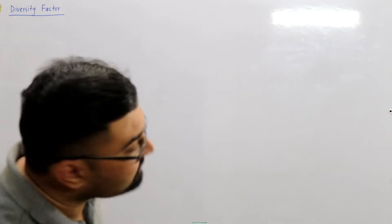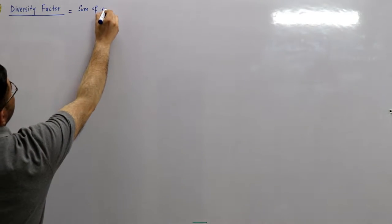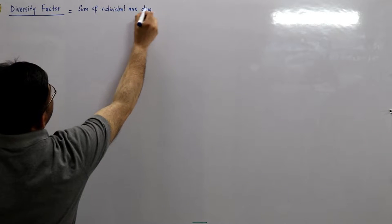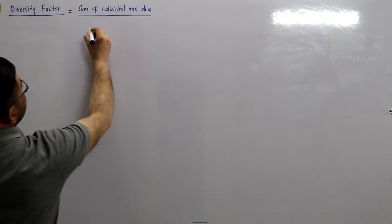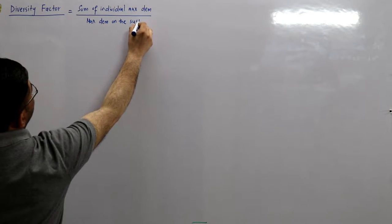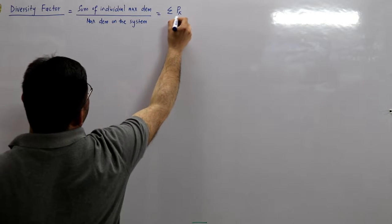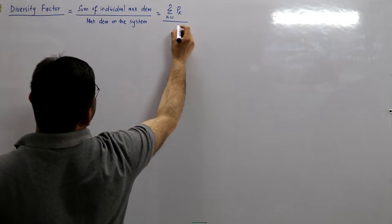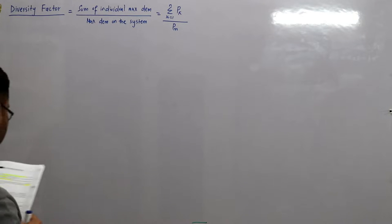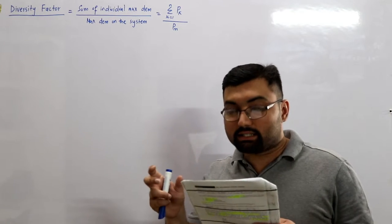If I define it: the diversity factor is the summation of individual maximum demands divided by the maximum demand on the power system. Writing it as a formula: summation of Pk for k running from 1 to n, for n number of consumers, divided by Pm of the system. The habit and trend followed by various consumers is referred to as diversity, and it is determined by the diversity factor.